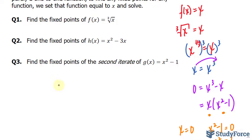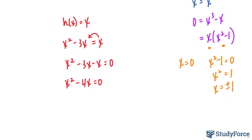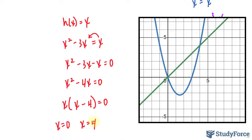This time we have h of x equal to x squared minus 3x. We set that function equal to x: x squared minus 3x equals x. Bringing this over to collect like terms and simplify, we get x squared minus 4x equals 0. Factoring out an x, and solving, we get x equals 0 and x equals positive 4. Here's a visual of what this looks like.